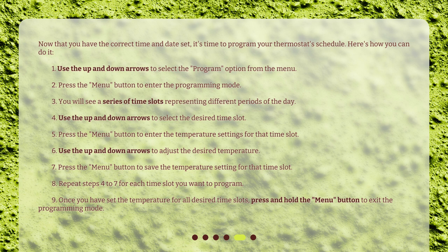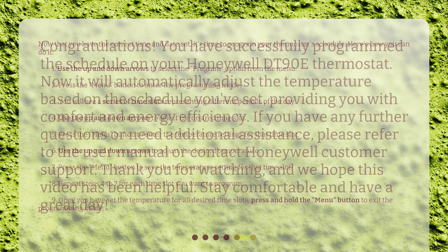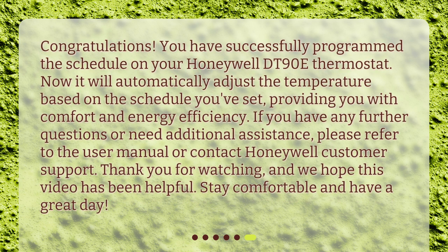9. Once you have set the temperature for all desired time slots, press and hold the Menu button to exit the programming mode. Congratulations! You have successfully programmed the schedule on your Honeywell DT90E thermostat. Now it will automatically adjust the temperature based on the schedule you've set, providing you with comfort and energy efficiency.